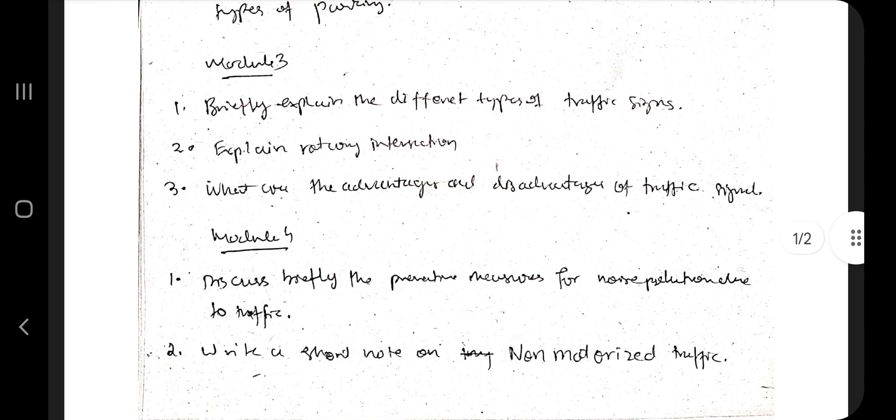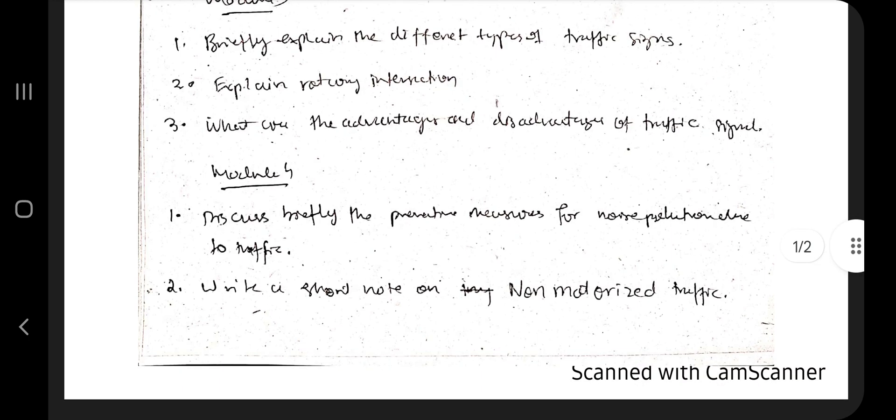Coming to Module 3, the important ones are the traffic signs, different types of traffic signs. They have explicitly asked with the name itself, so as many traffic signs you can know, that's better for you. Explain rotary intersection and something green waves also there. If that is in the notes, you can study that as well. Advantage and disadvantage of traffic signals.